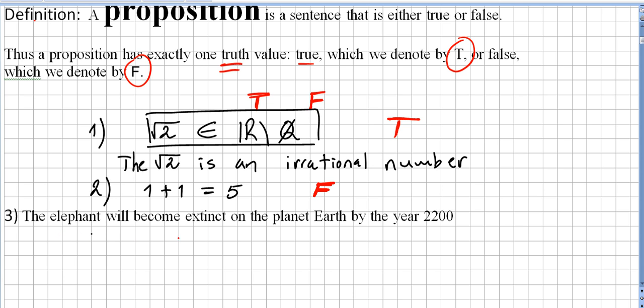Now, what about the third one? The elephant will become extinct on the planet Earth by the year 2200. Well, this one either will be true or false, but we have to wait for the year 2200 to give an answer. We are pretty sure that either it will be true or false, but for the time being, we have no answer for this.